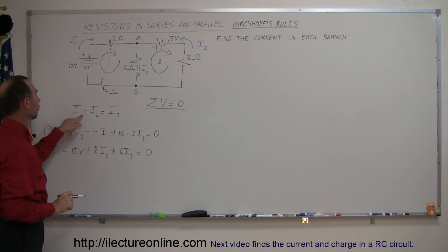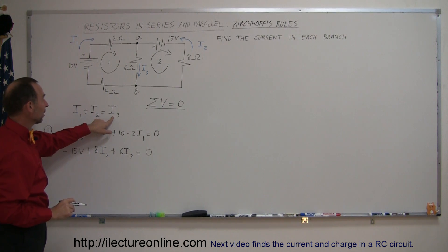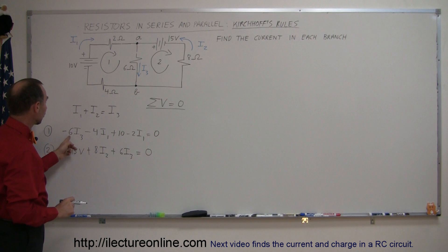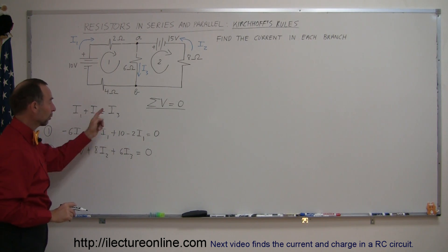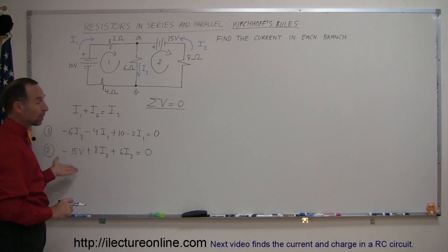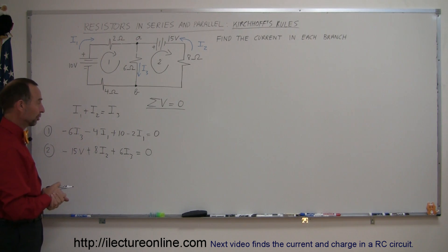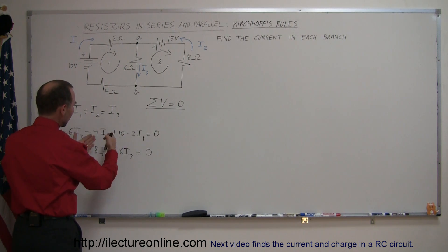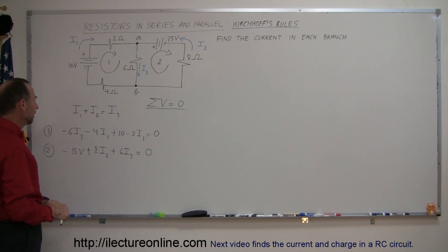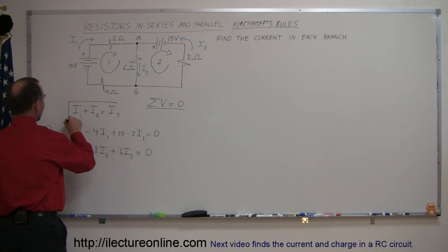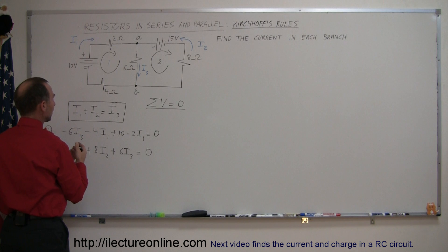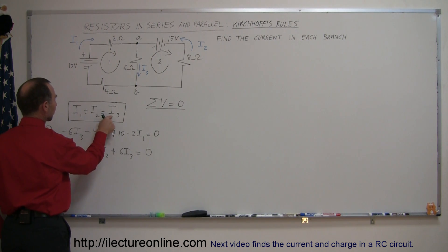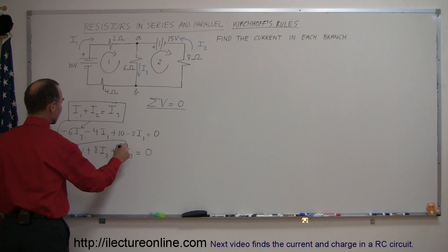So using Kirchhoff's rule number 1 — sum of all currents entering a branch equals sum of all currents leaving the branch — and rule number 2 twice around two loops — sum of all voltage rises and drops around any loop equals zero — I now have three equations and three unknowns and I'm ready to solve for the currents. Since the first equation is already solved for I3, I can substitute I3 equals I1 plus I2 into the second and third equations. That will eliminate I3 and leave two equations with just two unknowns.